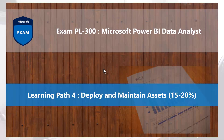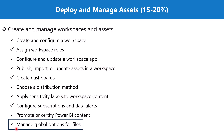Bismillahirrahmanirrahim. Hello everyone. Welcome back to the PL 300 exam preparation series, where we are exploring the fourth learning path: Deploy and Maintain Assets. In this video we are going to discuss the topic 'Manage Global Options for Files,' which is part of the section 'Create and Manage Workspaces and Assets.' This topic covers some of the options related to Power BI Desktop files and also some of the options available with reports in the Power BI service.